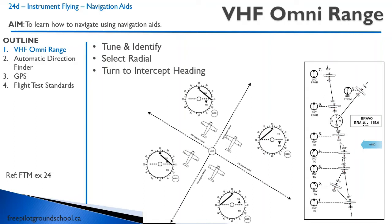The acronym we use is 'from top to bottom.' Remember there's a to/from flag. If we want to go to the VOR, we put the radial on the bottom. If we want to go from the VOR, we put the radial on the top.